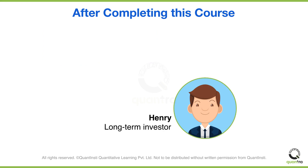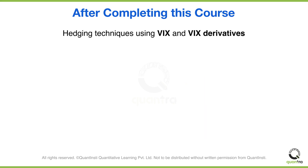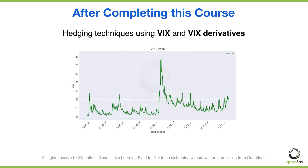If you relate to Henry and wish to build a portfolio that can withstand volatility, you might be interested in learning more about the VIX. VIX helps us quantify the extent of overall volatility in the markets. As you can see in this graph, while markets across the globe crashed due to the COVID crisis, the VIX shot up to its highest point. Going long on VIX derivatives can be an effective way to hedge portfolios during volatile times, and we will implement this with the help of two strategies based on VIX.